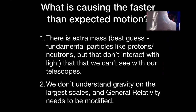When these observations came in, there were a couple of different possibilities. What could be causing this generally faster-than-expected motion? One possibility is extra mass — our best guess being some fundamental particle like a proton or neutron, but one that doesn't interact often with light, making it very hard for us to see. That extra mass is there causing gravity, but we just can't see it with our telescopes. The other possibility is that something is wrong with our understanding of gravity and that Newton's ideas and general relativity need to be modified to describe how gravity works on very large scales.